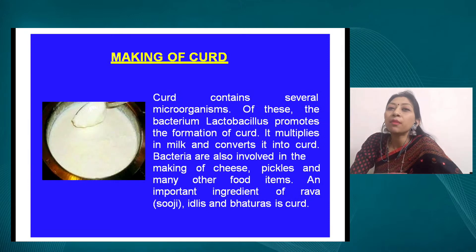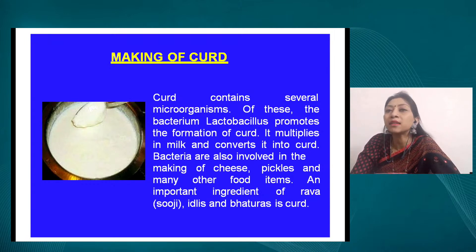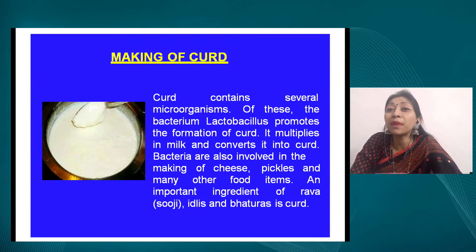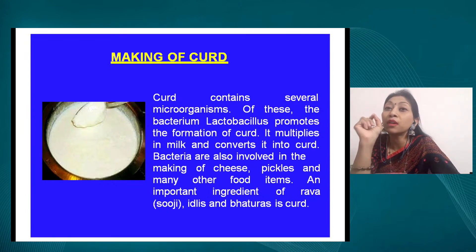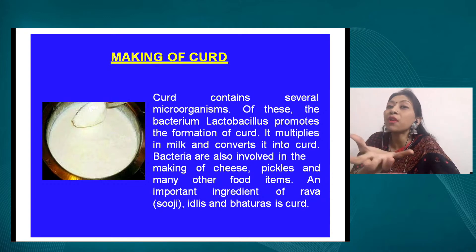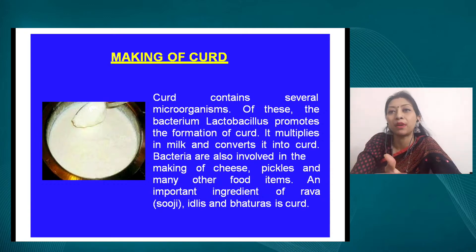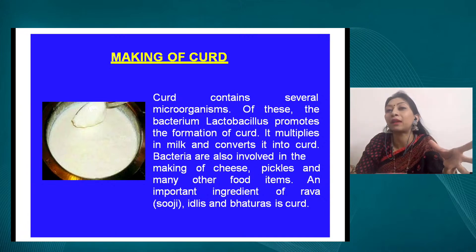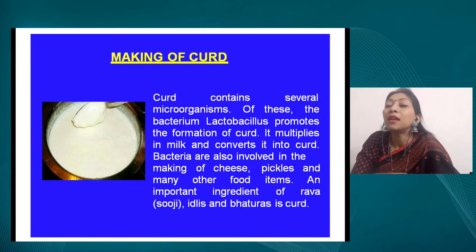Making of curd — science is available in the kitchen, the best laboratory for science experiments. To make curd, you take a little already-formed curd which has lactobacillus bacteria, add one spoon of it to lukewarm milk, and automatically the territory of that bacteria increases in the milk sample. You add only one spoon of curd and the entire milk sample then converts into curd. That is how curd is made.